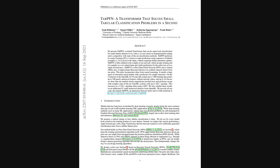What this paper introduces is essentially a pre-trained transformer model called Tab PFN that's designed specifically for small tabular classification tasks. The really cool thing is that it claims to do this super fast — like in under a second — and without needing any hyperparameter tuning. It just learns directly from the data you feed it during inference using something called in-context learning.